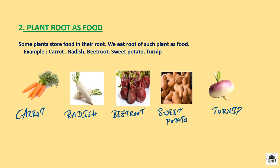Now, plant root as food. As soon as winter comes, your dadi and nani prepare gajar halwa. The main ingredient of gajar halwa is carrot, which is the root of the plant. Some plants store food in their roots. Examples of roots we eat are carrot, radish, beetroot, sweet potato and turnip. These plants store food in their roots.